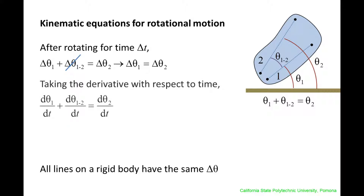If we differentiate the equation theta1 plus theta12 equals theta2 with respect to time, we obtain the time rate of change of the angular displacement, also called the angular speed. Since theta12 does not change in time, d theta12 dt is 0, and theta1 dot equals theta2 dot. Angular speeds are often written as omega, so we rewrite the equation as omega1 equals omega2. This states that the angular speed of line 1 equals the angular speed of line 2, and since the lines were drawn arbitrarily, this means that all lines on a rotating body have the same angular speed.